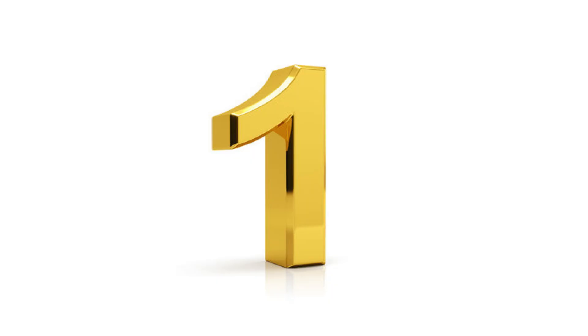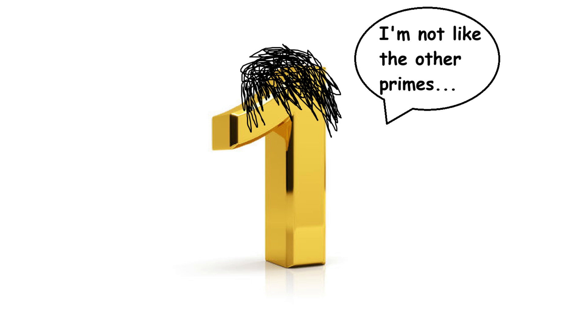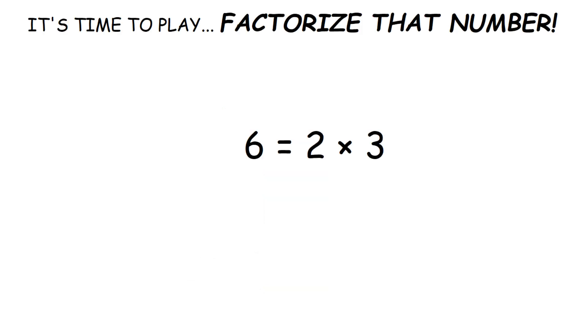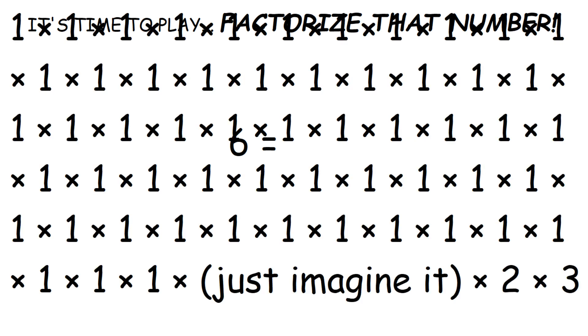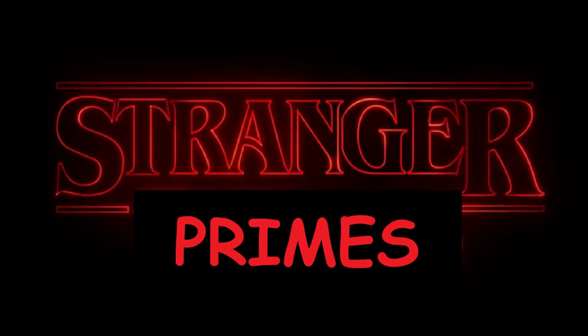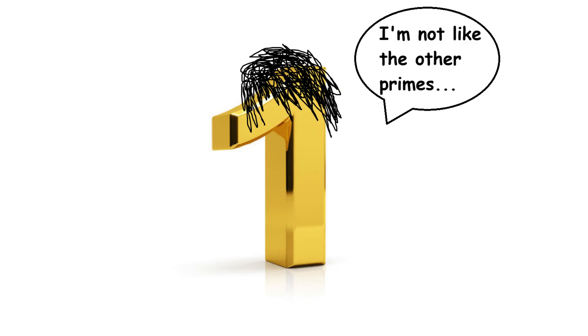If you want to call 1 prime, then you have to acknowledge that it functions much, much differently than the other primes. 2 times 3 will always equal 6. But if you add another 2, the result is 12. 1 times 2 times 3 will also always equal 6. You can add as many ones as you want, and it will still equal 6. That's a very strange way for a prime to function. And it's for that reason and others that we do not call 1 prime.